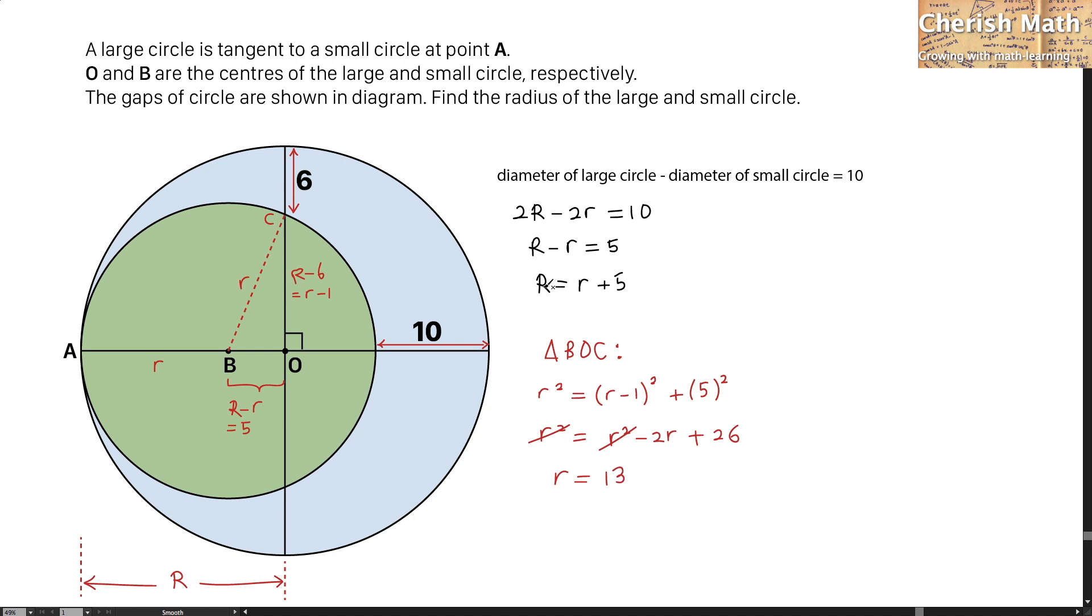To find what is the value of the capital R, I will have to substitute the value of r equals 13 into this equation. And that means I'm going to get the value of the capital R as 13 plus 5, and that is producing value of 18 units.